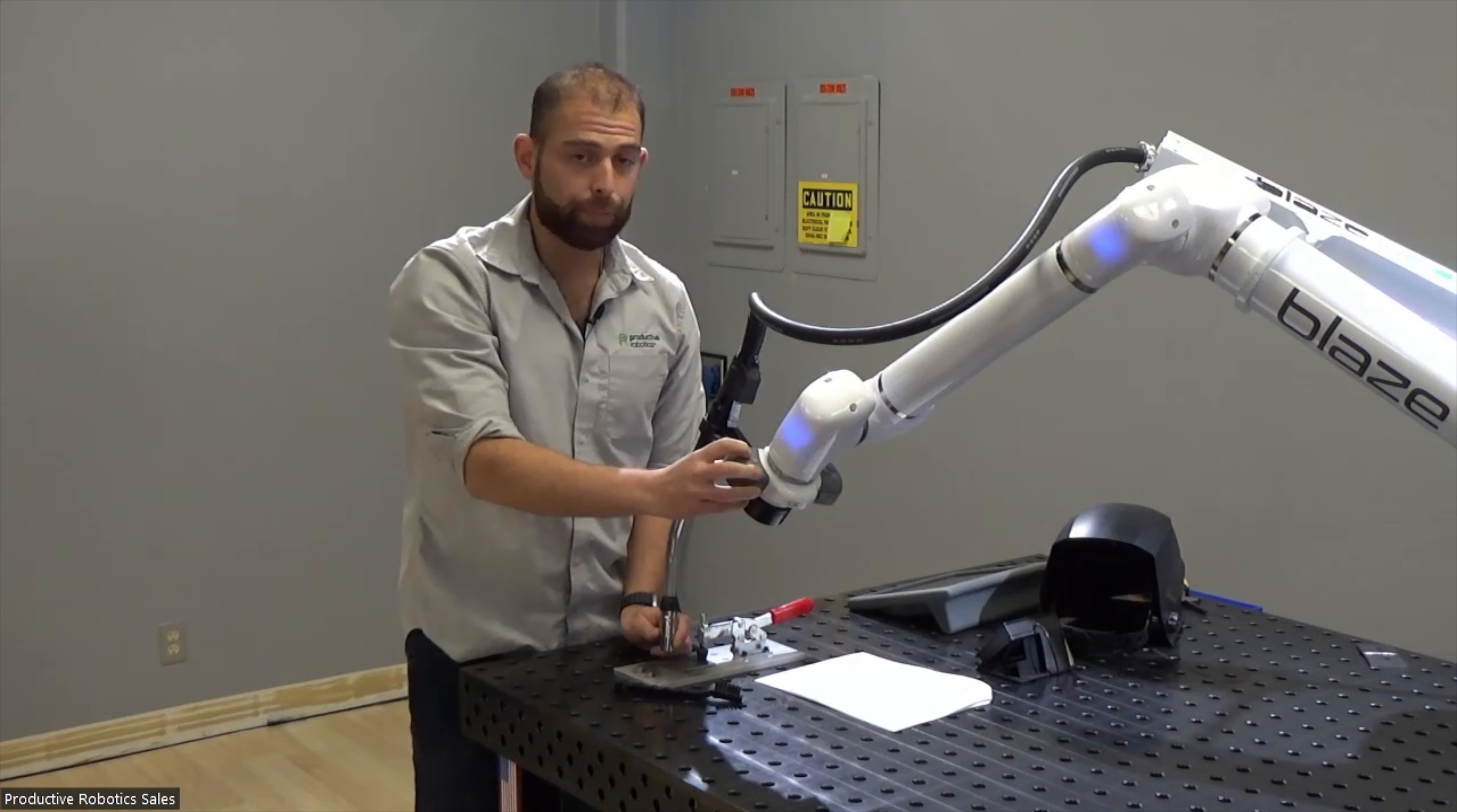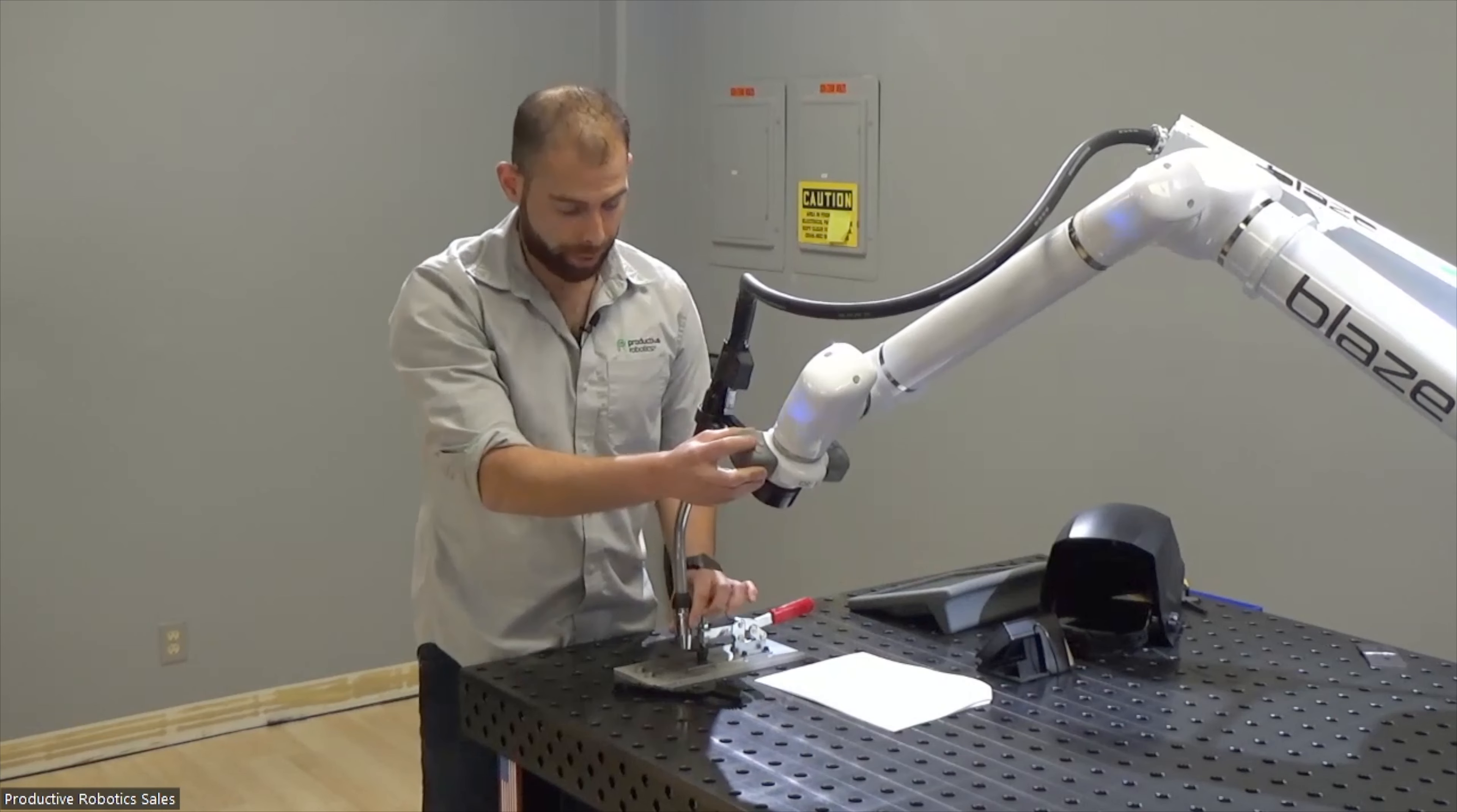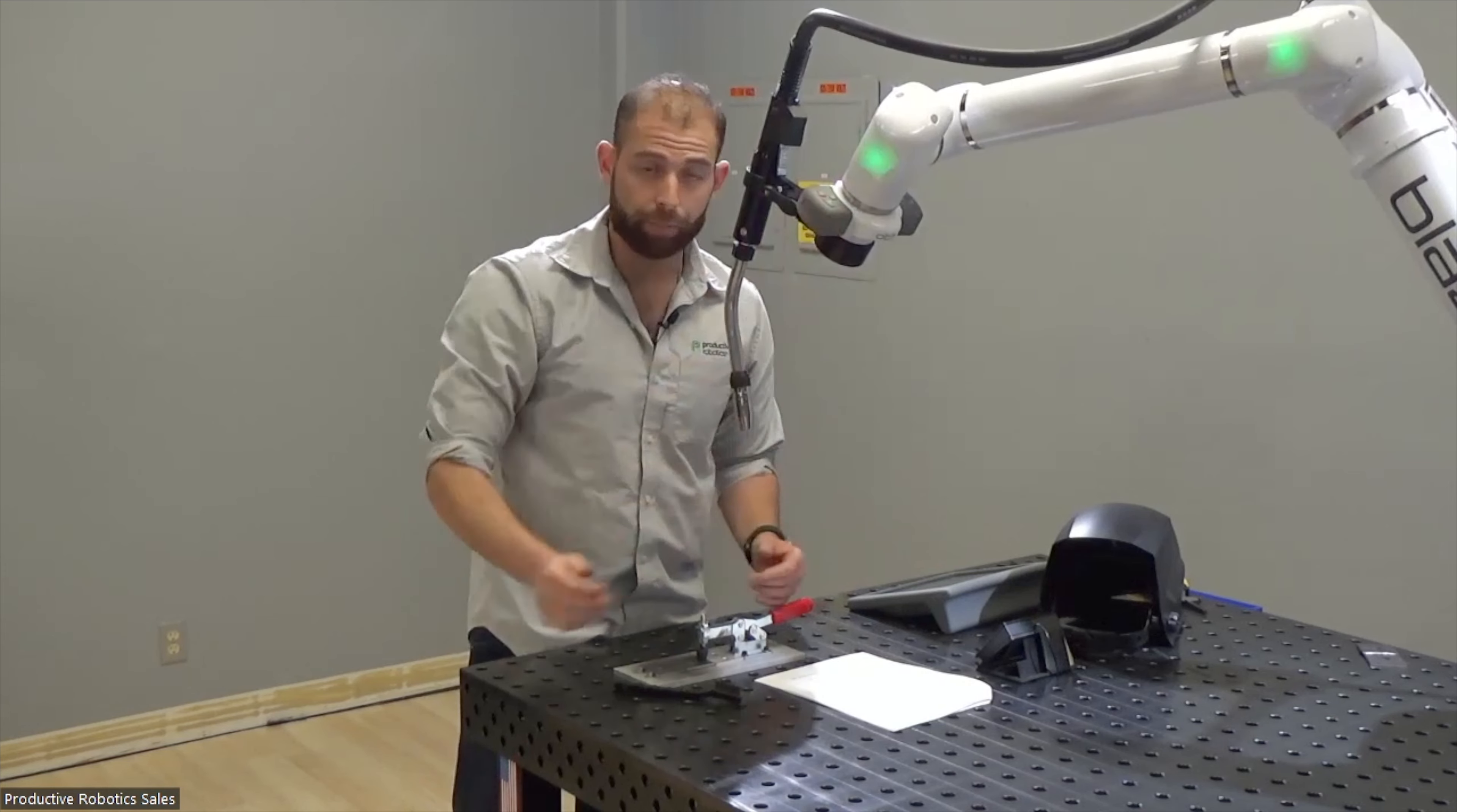And first what we'll need to do is show Blaze where we want to start the weld. We press this button. Next we show Blaze where we want it to end the weld and press the exact same button.